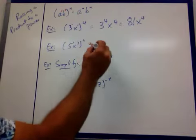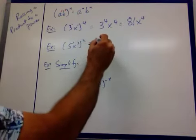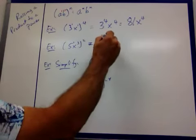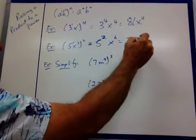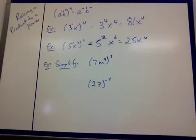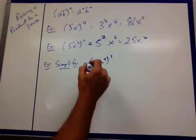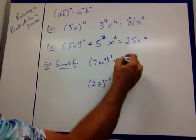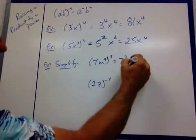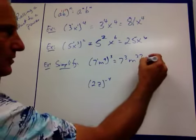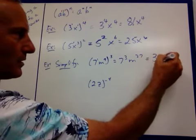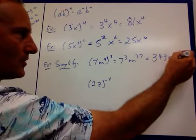Same thing here. There's an exponent there. So 5, 1 times 2 is 2, 3 times 2 is 6, 25 x to the 6th, 5 squared is 25. 7 to the 3rd power, 1 times 3, 9 times 3 is 27, m to the 27th. 7 times 7 is 49, times 7 is 343, m to the 27th.